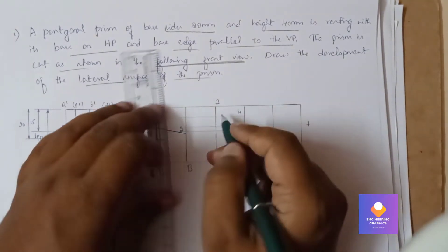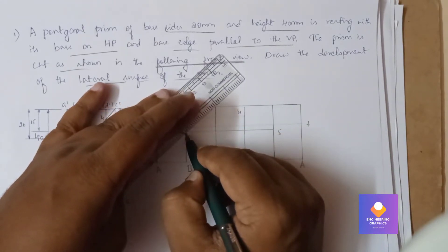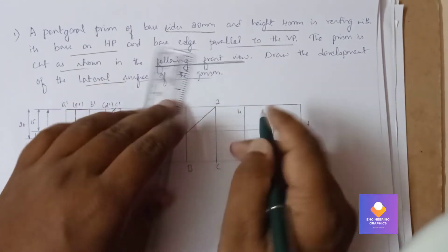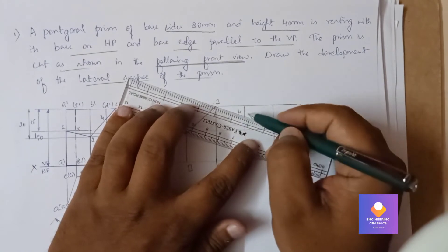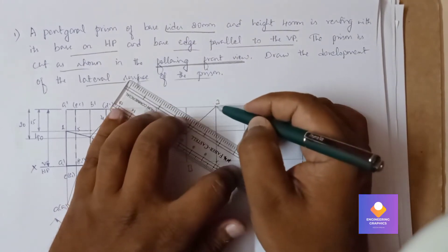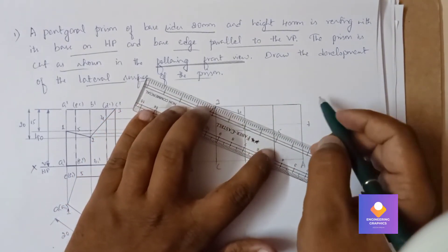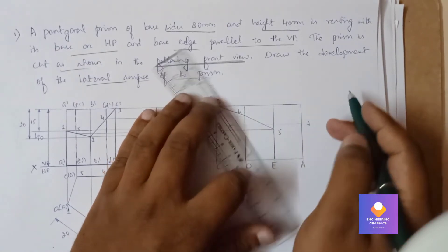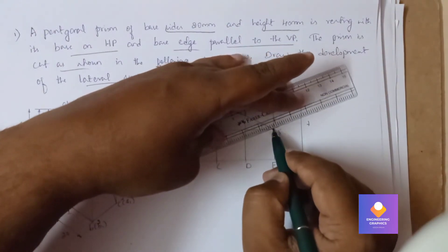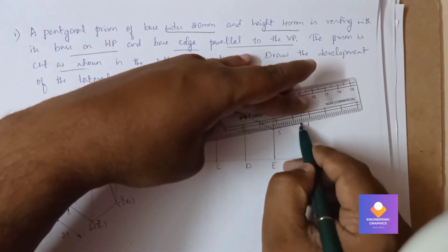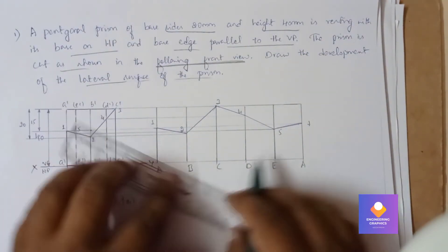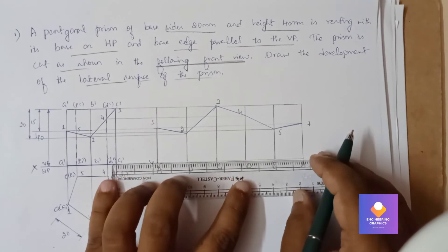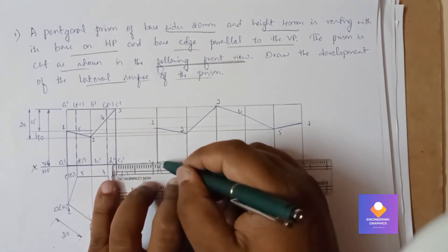Then 2 to 3, then 3 to 4, and 4 to 5, 5 to 1. Then this truncated cutted portion we need to darken it.